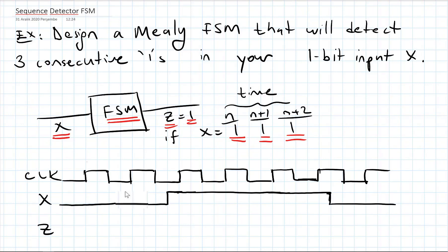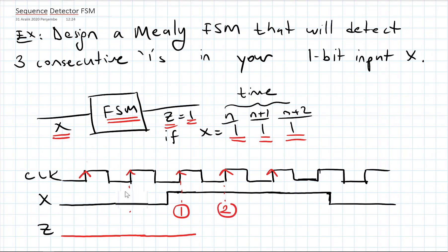Let's look at this from a timing diagram — it will be easier. I have a clock signal here, and my flip-flops are sampling at the rising edge. Initially X is 0 and Z will be 0. Then I got a 1 here the first time, and another 1 here — so this will be my second one. If I have two ones here, then I will have another one which will be 3 ones.